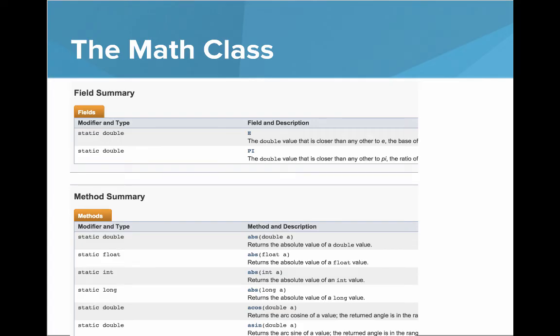Another example you'll use in many Java programs is the Math class. In the documentation you can see field summaries and method summaries — things like static double E, static double PI, and static methods like static double abs for absolute value. These are static methods you can use without an instance of the Math class, called on the class name with capital M.